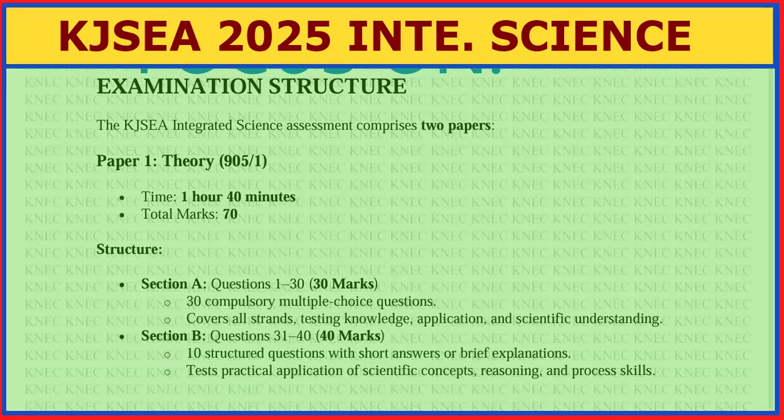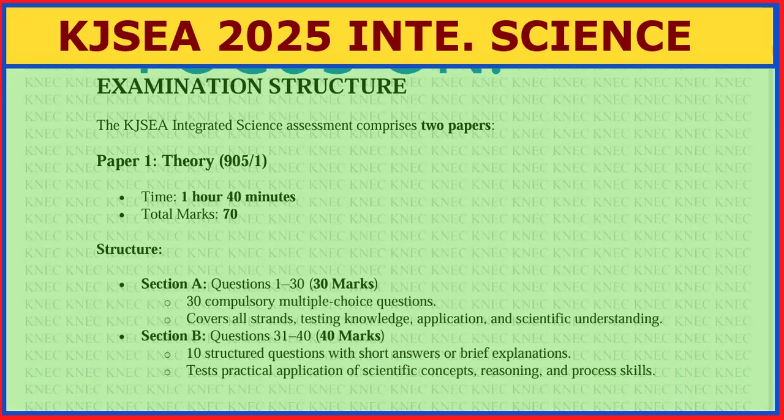Section A consists of multiple choice questions — you are given four choices and choose the correct answer. It covers all strands, testing knowledge, application, and scientific understanding. Section B is questions 31 to 40, that is 40 marks — so 30 plus 40 gives 70 — with 10 structured questions requiring short answers or brief explanation.